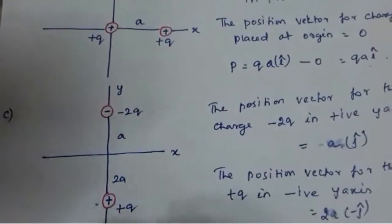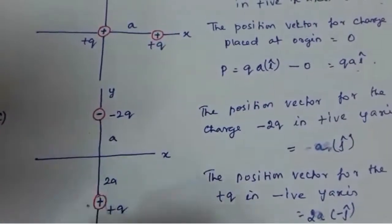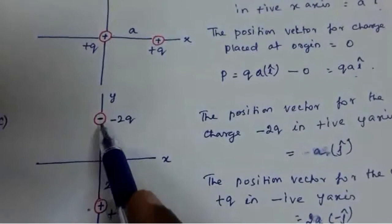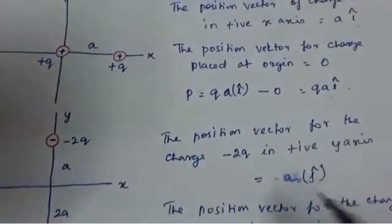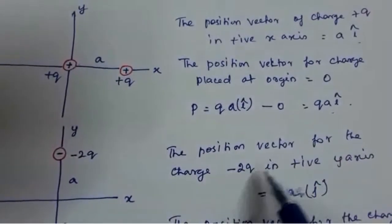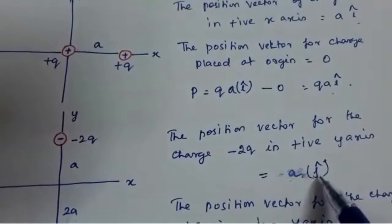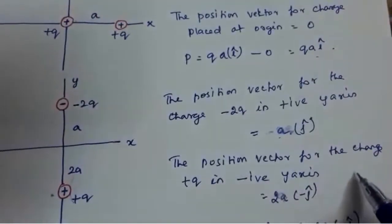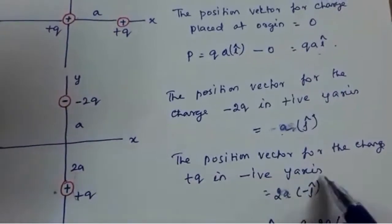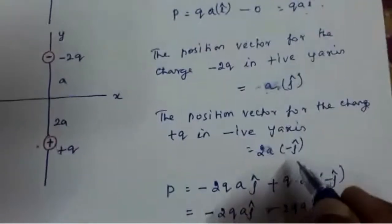Coming to the third diagram: there are two charges on the y-axis, one in the positive y-axis and another in the negative y-axis. The position vector for charge -2q on the positive y-axis, where the distance is a, is a into ĵ-vector. The position vector for charge +q in the negative y-axis, where the distance is 2a, is 2a into -ĵ-vector.